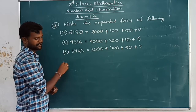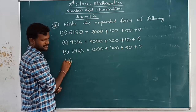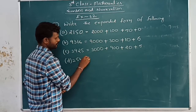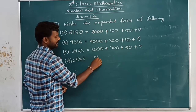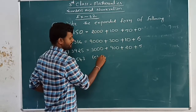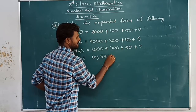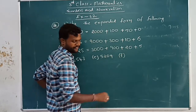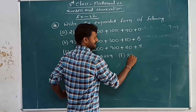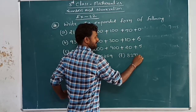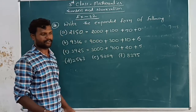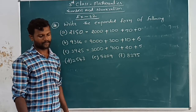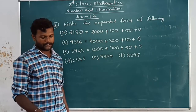Similarly, we have to write the expanded form of the given numbers. D is two thousand five hundred and forty-three, E is five thousand two hundred and nineteen, and F is eight thousand three hundred and ninety-five. Write the expanded form of all these numbers.